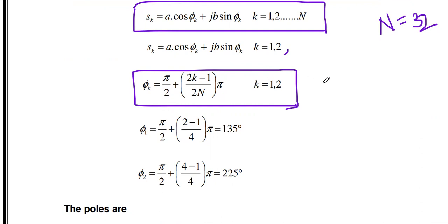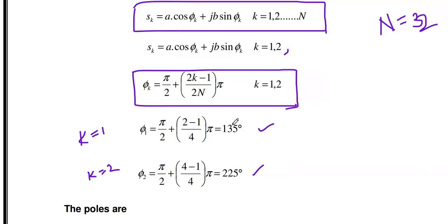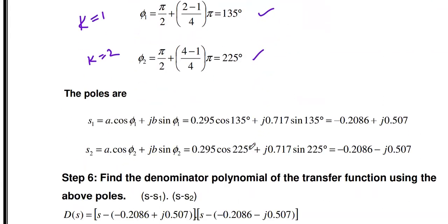The angles φ₁ = 135° and φ₂ = 225° are standard results: if N = 2 the first angle is 135° and second is 225°. If N = 3 we would get three different angles, which we will discuss in the next problem. So φ₁ and φ₂ are calculated; now substitute a, b, and the angles into the pole formula.